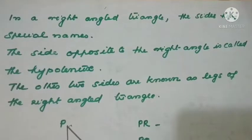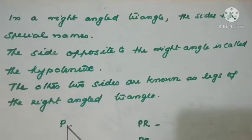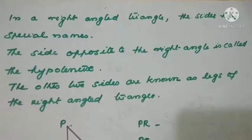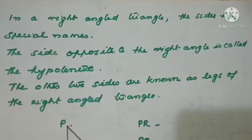Good morning children. This video is for 12th February. In a right-angled triangle, the sides have special names. In a triangle, if one angle is 90 degrees, it is called a right-angled triangle. The side opposite to the right angle is called the hypotenuse. The other two sides are known as legs of the right-angled triangle.